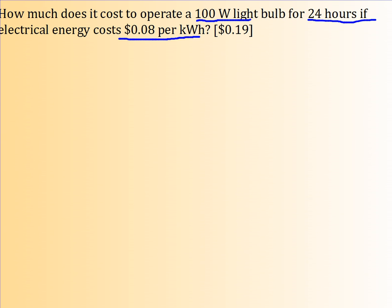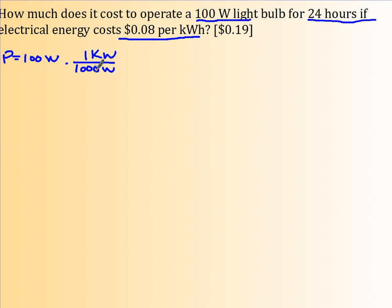We have 100 watts, so the power is 100 watts. The first thing you want to do is convert your power to kilowatts. I know 1,000 watts is 1 kilowatt. Now I'm going to cross out my zeros — 1 divided by 10 — so this is 0.1 kilowatts.